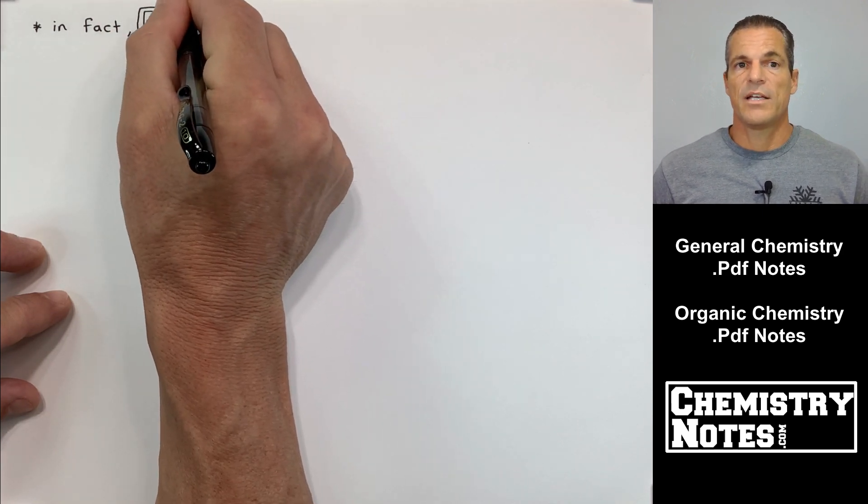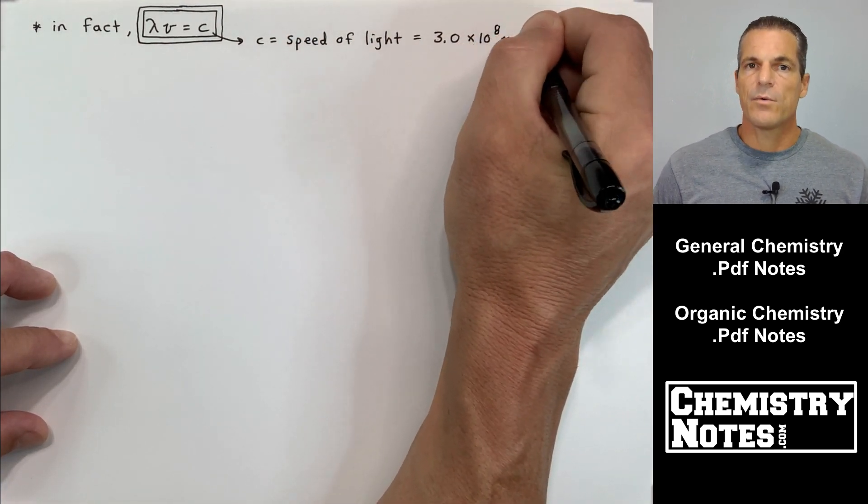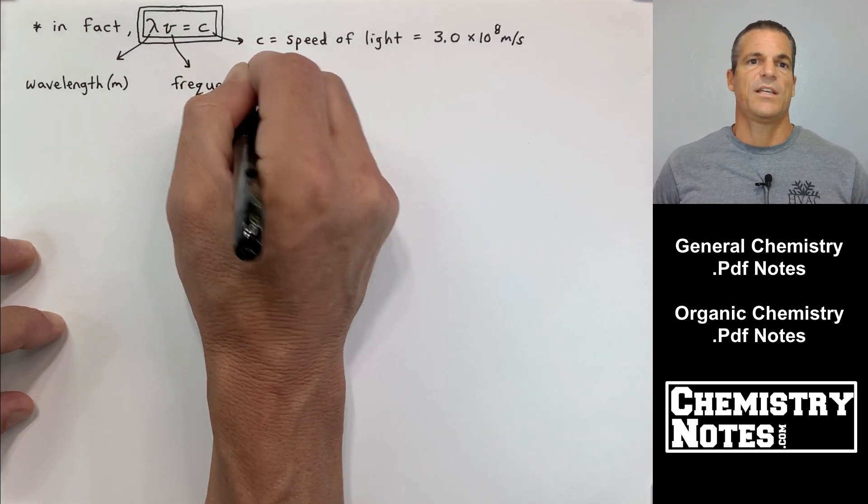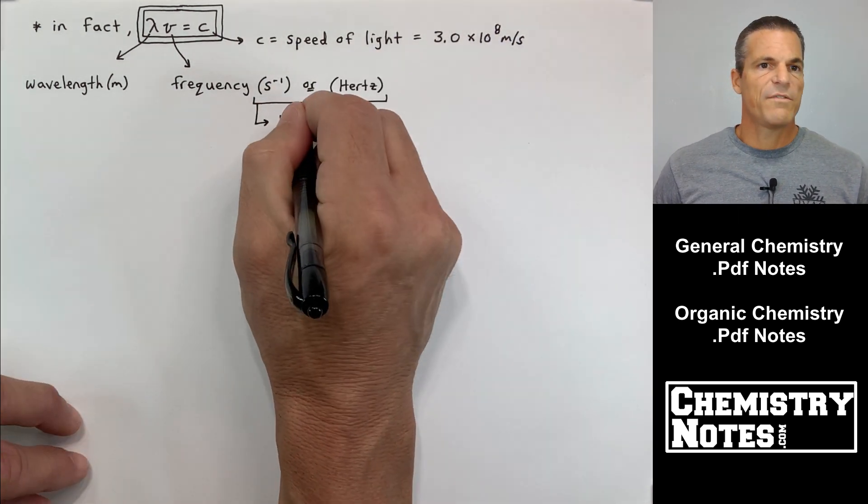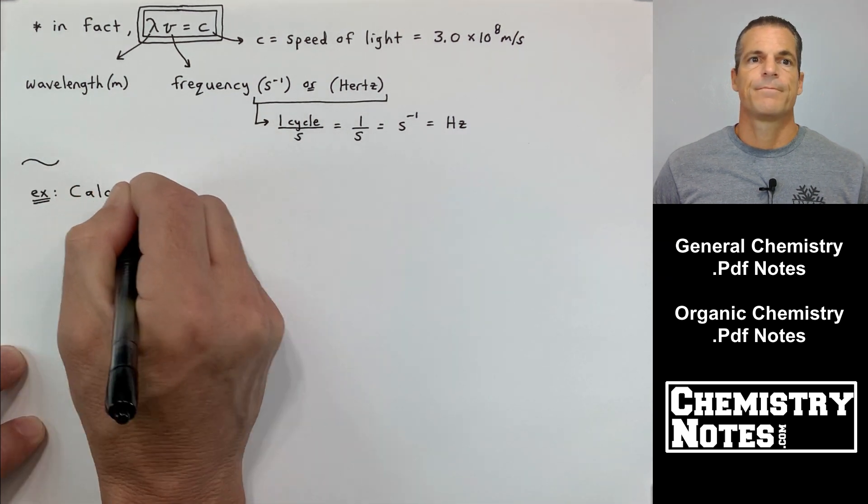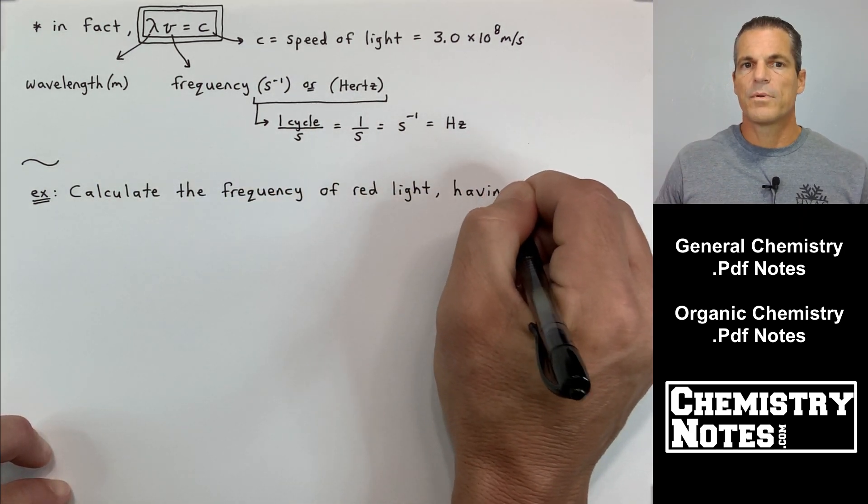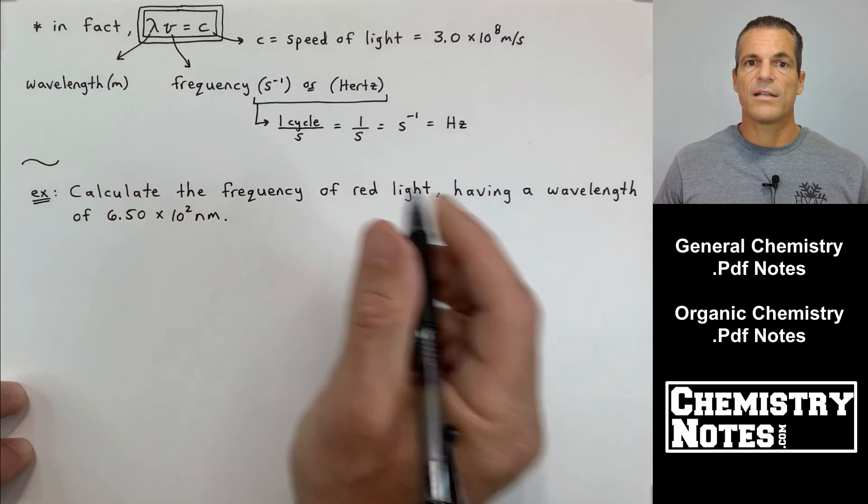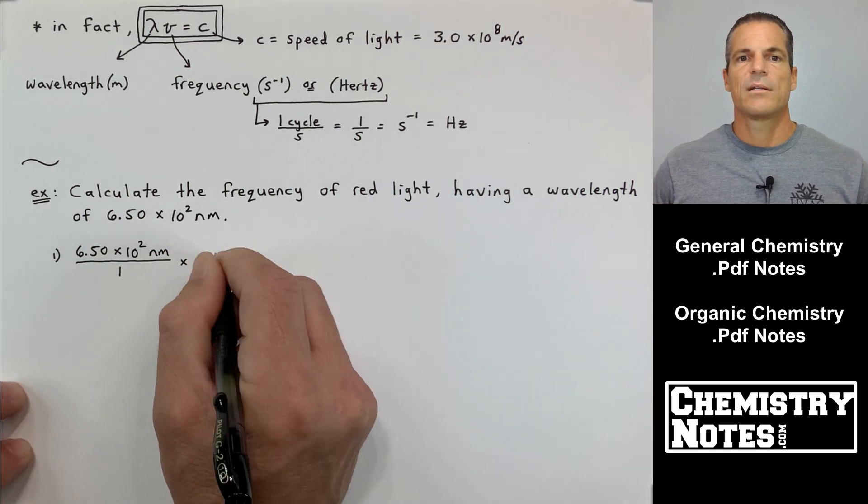We can have another relationship between frequency and wavelength that I have boxed up here. The wavelength of light times the frequency nu of light equals c. C is a constant, the speed of light, 3.0 times 10 to the eighth meters per second. Wavelength is in meters. It's a length, a distance. Frequency is in seconds to the minus one or hertz. One cycle per second equals one over a second, which is second to the minus one, which is a hertz. So frequency is a second to the minus one, a cycle per second, or a hertz.